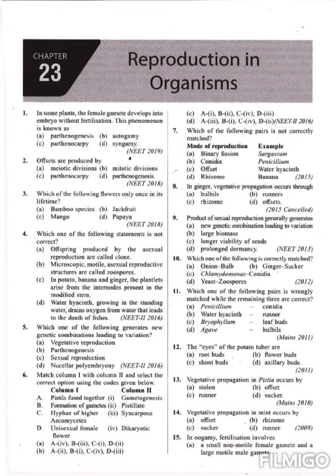In potato, banana and ginger, the new plants arise from the internodes present in the modified stem — that is the wrong statement, because potato, banana and ginger are included in different types of asexual reproduction, so the same internodes are not responsible. Option D, water hyacinth growing in standing water drains oxygen from the water leading to the death of fishes, is a correct statement. So the third statement, C, is not correct — that is the answer.